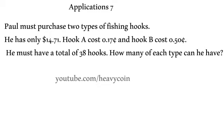We're solving systems of equations in two variables. Paul must purchase two types of fishing hooks. He has only $14.71. Hook A costs $0.17 and hook B costs $0.50. He must have a total of 38 hooks, so he must be setting out a trot line or something. How many of each type can he have?